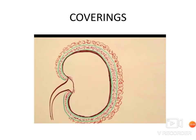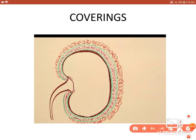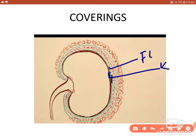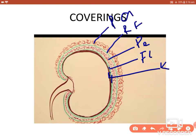To summarize the coverings of the kidney from inner to outer: first is the fibrous capsule (true capsule, made of fibrous tissue); second is the perirenal fat; third is the renal fascia; and outermost is the pararenal fat.